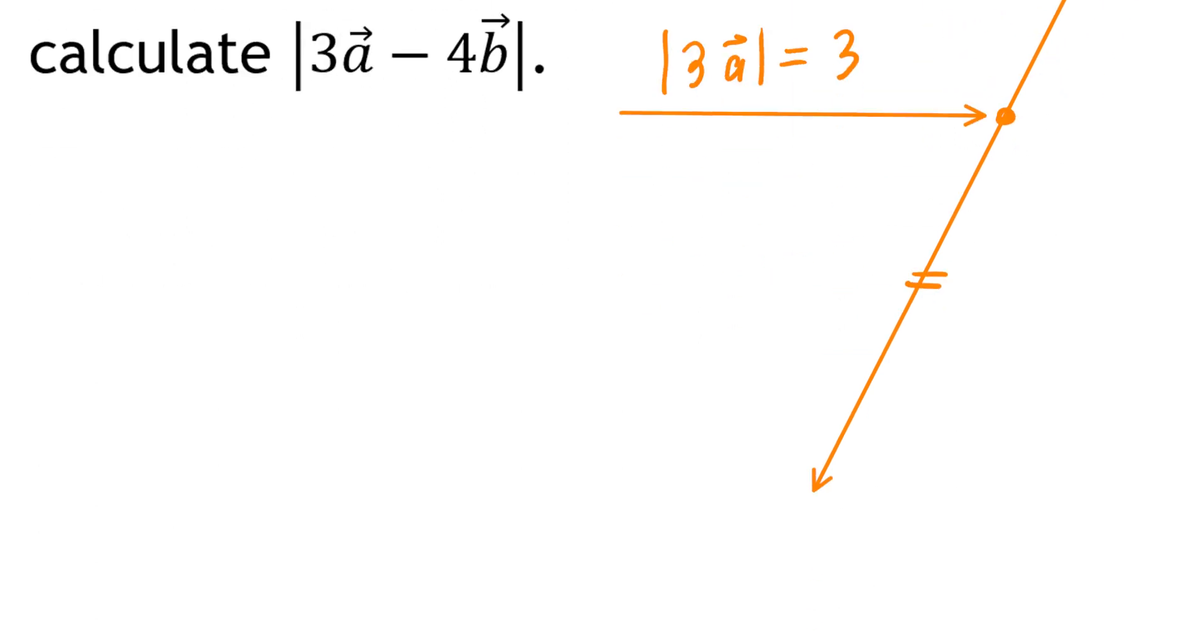This is the mistake that I see all the time. We're going to show you what not to do, then we'll talk about what to do. If you think about the magnitude of negative 4 times vector B, very often, one student is going to write down negative 4. And this is not how you do it.